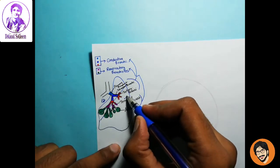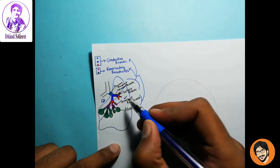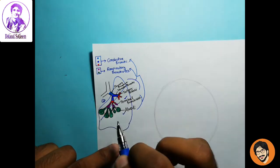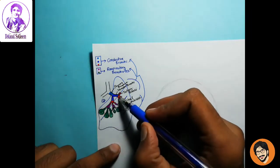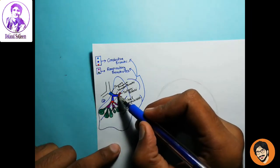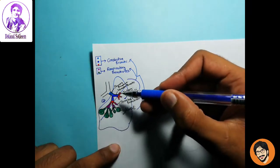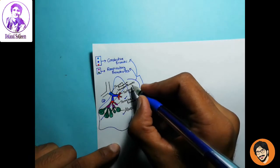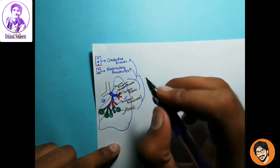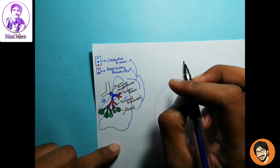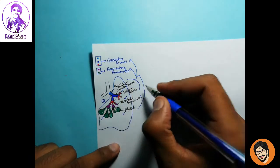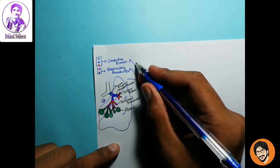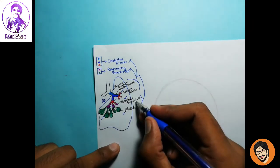1. Terminal bronchiole. 2. Alveoli. In this cut section, 3. Tertiary bronchiole.